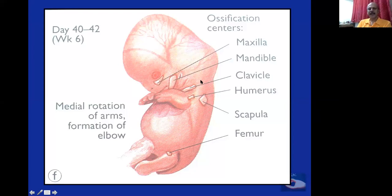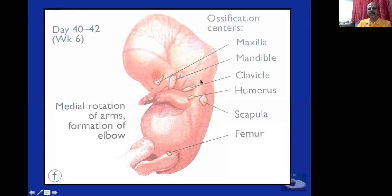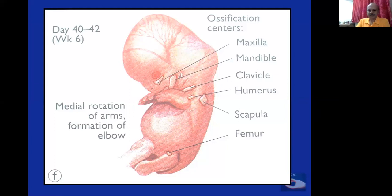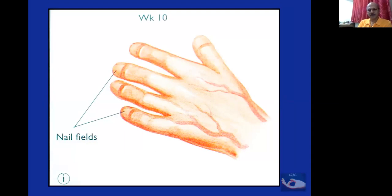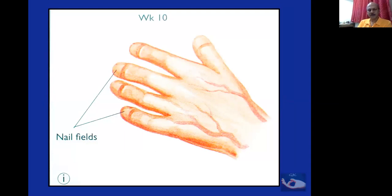Looking at the arm bud — these are the arm buds that form and start growing. By week 6, the hands are formed. Then there is a medial rotation of the arm: the arm bud undergoes medial rotation, the elbow forms, the hands meet and cross each other due to this rotation. The distal phalanges form, the tarsals form, and by week 10 the nail fields have formed.